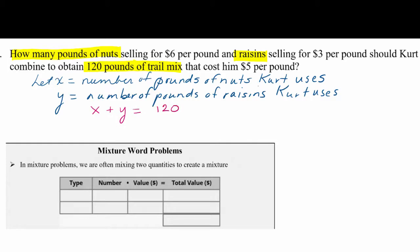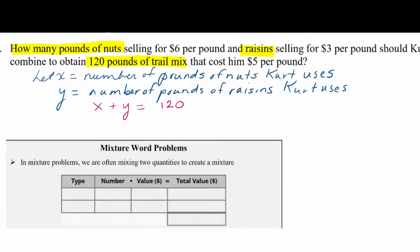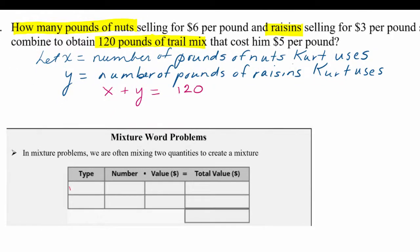To find the second equation we're going to use the table again. We're mixing nuts and raisins to create a mixture. The number of pounds of nuts is represented by x and the number of pounds of raisins by y. For the value column we'll use the price per pound: $6 per pound for nuts and $3 per pound for raisins.